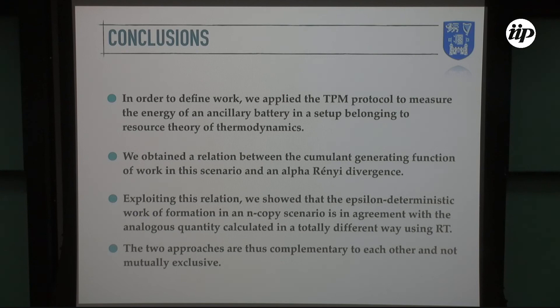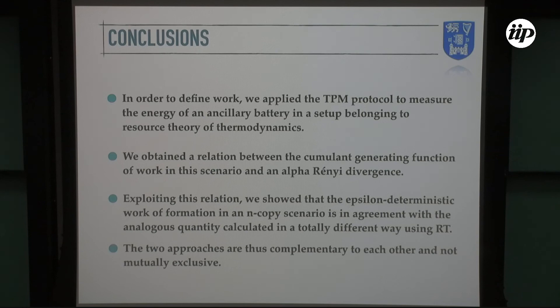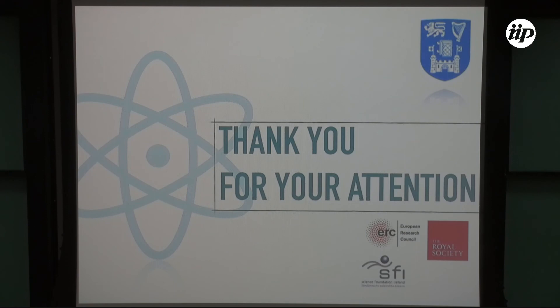In conclusion, the take-home message is the following. In order to define work, we apply the two-point measurement protocol — the stochastic method — to measure the energy of an ancillary battery in a setup which belongs to resource theory of thermal operations. We obtain a relation between the cumulant generating function of work in this scenario and an alpha-Rényi divergence, exploiting which we show that the epsilon-deterministic work in an n-copy scenario is in agreement with an analogous quantity calculated in a totally different way using resource theories. This allows us to conclude that the two approaches, despite looking very different from each other, are actually complementary and not mutually exclusive. Thank you for your attention.